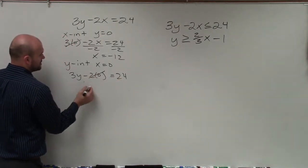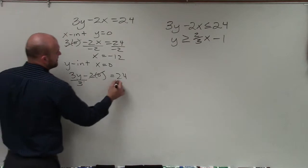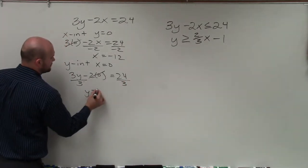because I have 3y minus 2 times 0 equals 24. That goes to 0. So I'm left with 3y is equal to 24. Divide by 3, y is equal to 8.